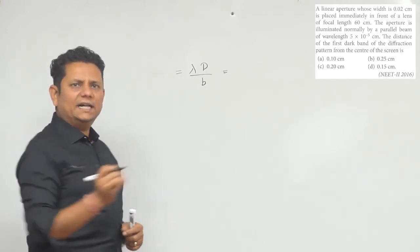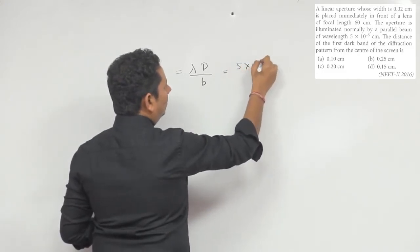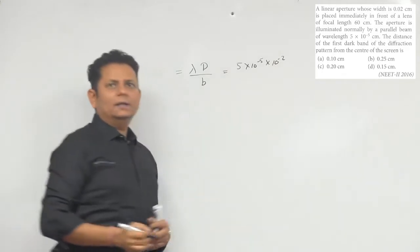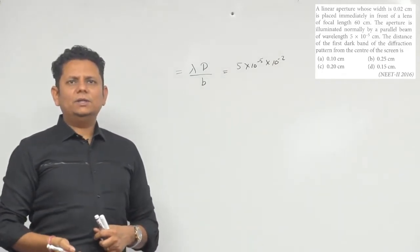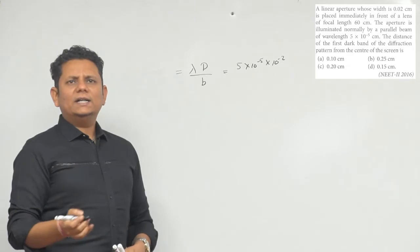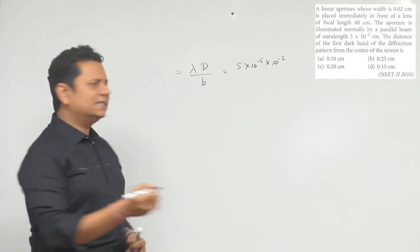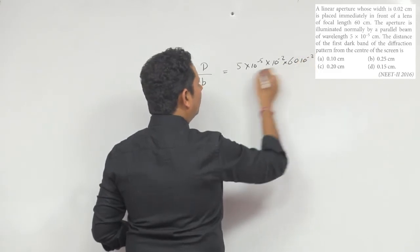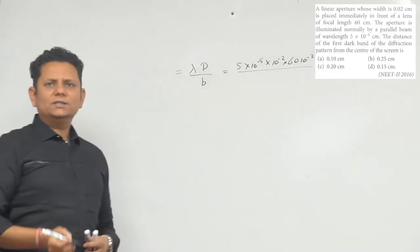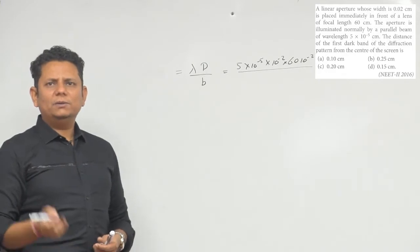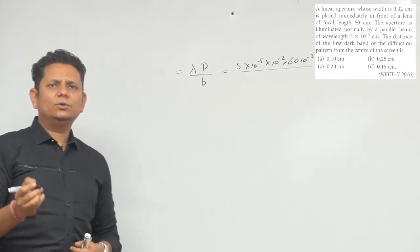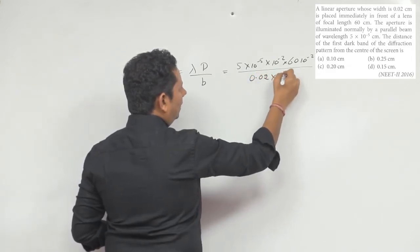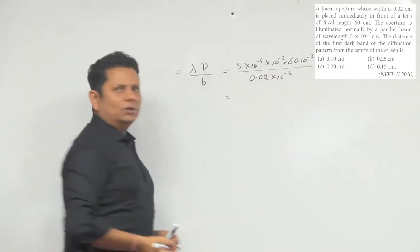Converting to meters: lambda = 5×10⁻⁵ × 10⁻² meters. The focal length d is 60 centimeter = 60×10⁻² meters. This is divided by B (aperture width) whose value is 0.02 centimeter = 0.02×10⁻² meters.